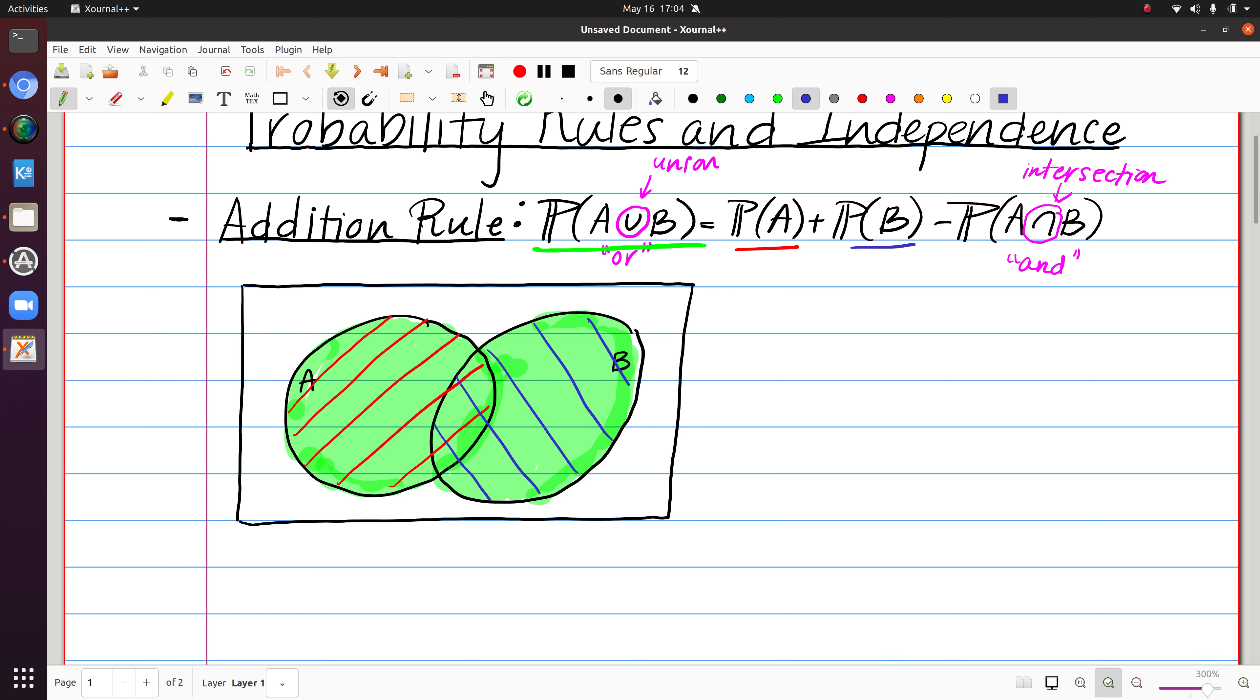And then the potential problem that we see here, let's see what's another color I can use, is that this part here gets double counted if you add everything in A to everything in B. So we subtract it once so that it's only counted once. A common mistake is people forget to subtract the intersection, and that would only make sense if you had these two circles or events that didn't overlap.